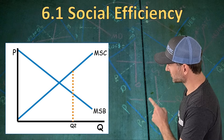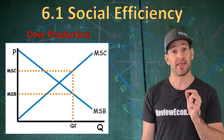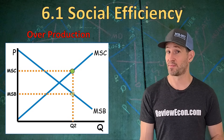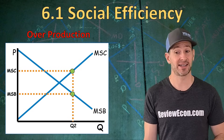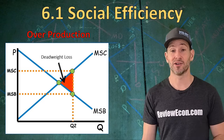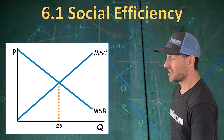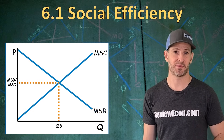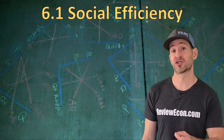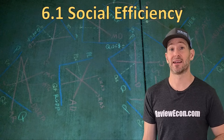At higher quantities, the marginal social cost is greater than the marginal social benefit — now we are overproducing this product. We can find some deadweight loss by finding the marginal social cost of that quantity, the marginal social benefit of that quantity, and our third point for the deadweight loss triangle is where marginal social benefit equals marginal social cost. That's our triangle of deadweight loss from overproduction. If we produce at Q3, that is where marginal social cost equals marginal social benefit — that is our allocatively efficient quantity of output. Allocative efficiency is often called socially optimal.